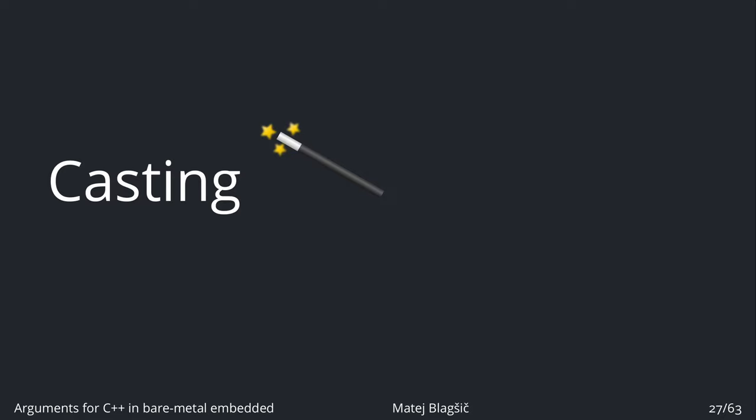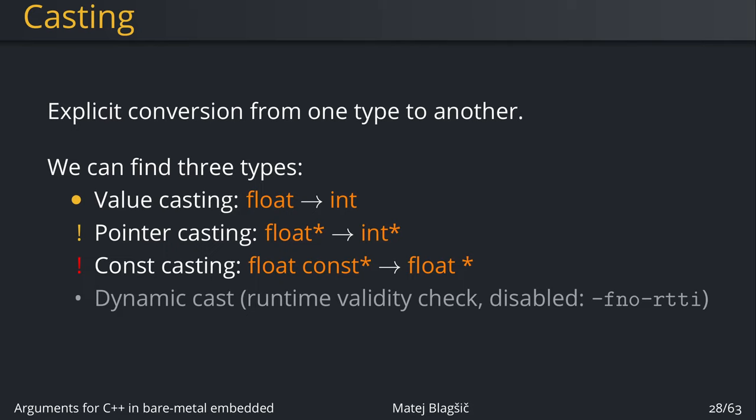The next topic is casting, and it's quite an important topic because casting is used all the time. So what is casting? Casting is a way to tell the compiler to convert explicitly one type to another. This counts for either values, pointers, constness, and all sorts of things.